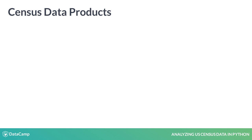Most governments need to know the number and characteristics of their population. In the US, a census is taken every 10 years by the Census Bureau, the Bureau of the Department of Commerce. Often, we just refer to the census when we mean the decennial census of population and housing. But the Census Bureau produces many other data products.